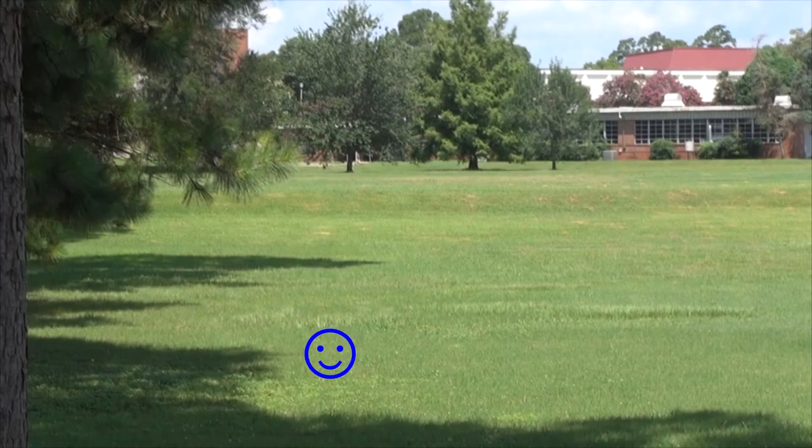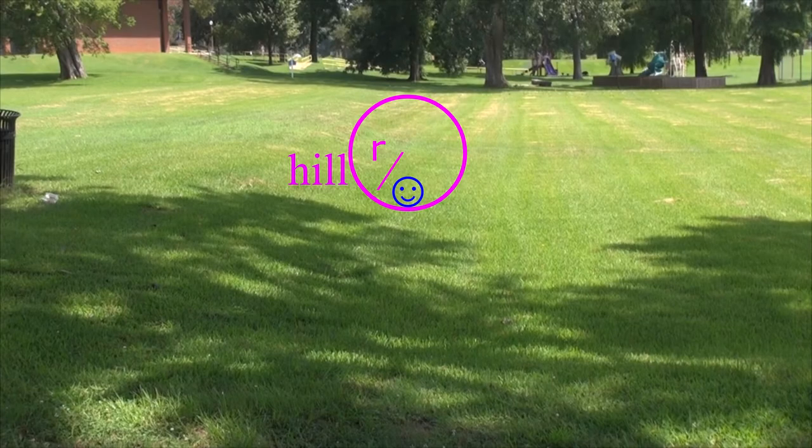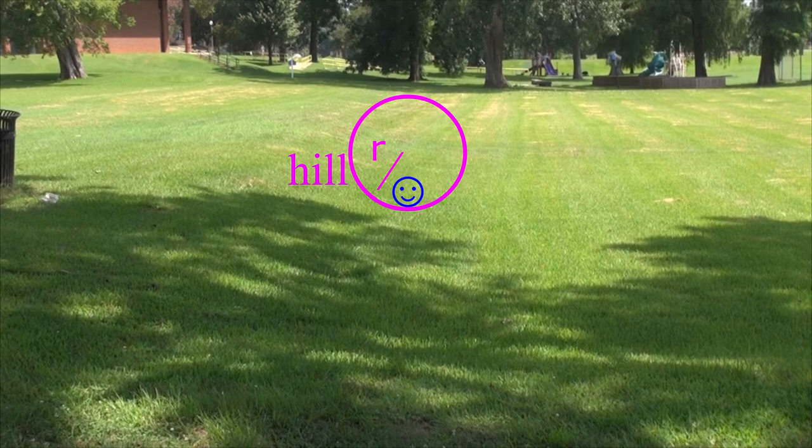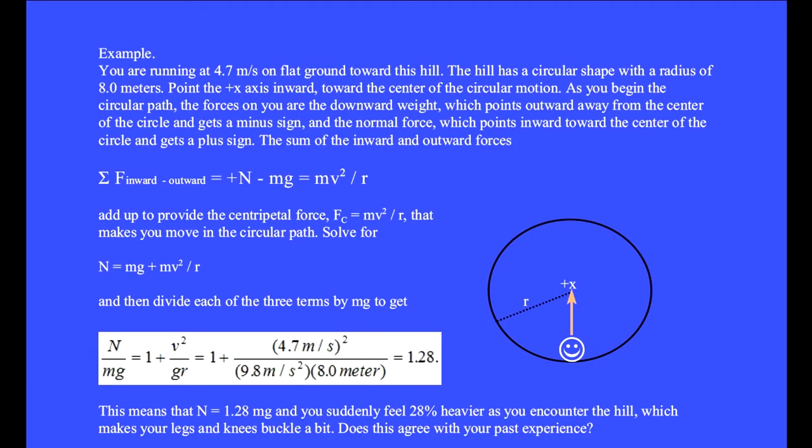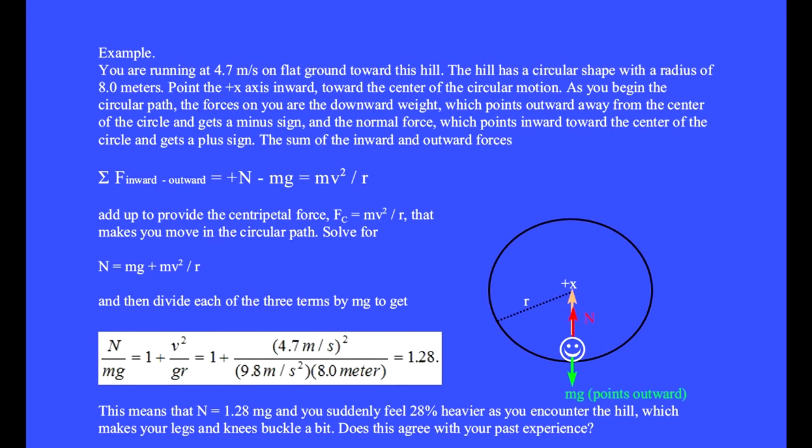You are running at 4.7 meters per second on flat ground toward this hill. The hill has a circular shape with a radius of 8.0 meters. Here is a sketch of your circular path along the hill. Point the plus x axis inward toward the center of the circular motion. As you begin the circular path, the forces on you are the downward weight, which points outward from the center of the circle and gets a minus sign, and the normal force, which points inward toward the center of the circle and gets a plus sign.